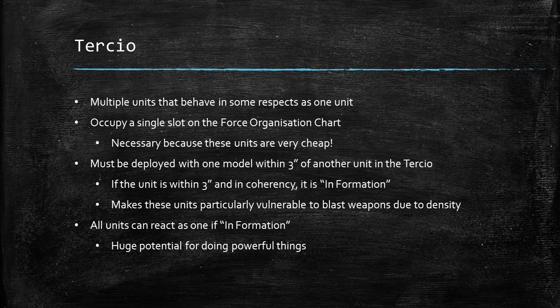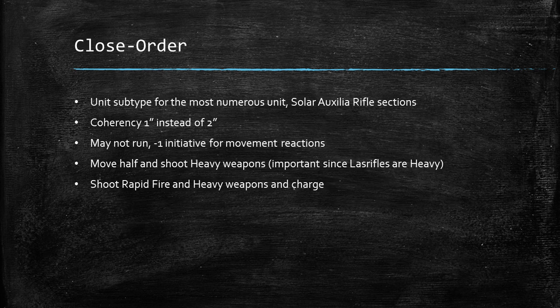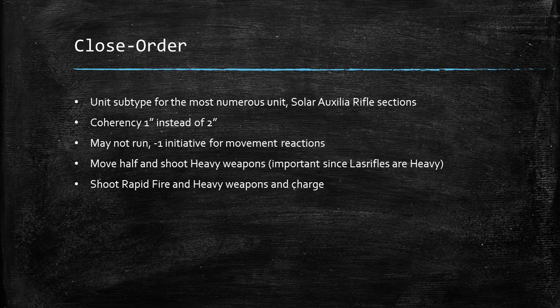Next we have the Close Order subtype. I wouldn't normally include something as granular as a subtype in a faction rules review, but this one really does change the way the army plays. The Solar Auxilia Rifle Section — your main infantry unit — has this subtype. It means your coherency distance is one inch instead of two, so it packs the unit more closely together. The unit can't run and gets minus one initiative for movement reactions, so they move less far — representing line infantry steadily advancing like a firing line.